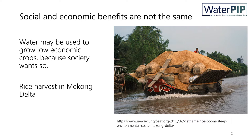It is not always an economic argument that explains it all. Look at the picture — water may be used to grow low economic crops, like rice in the Mekong delta, just because society wants so. Under social water productivity, we look at the benefits of water for society as a whole, whereas under economic water productivity, you have focused on the private benefits of one farmer of water being used.